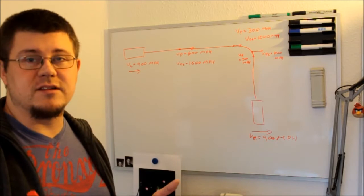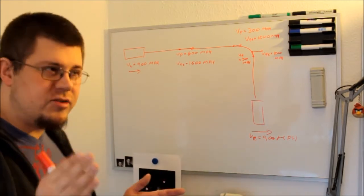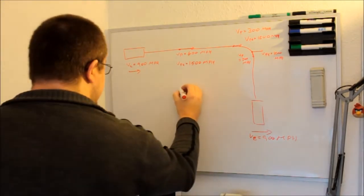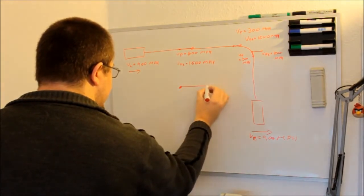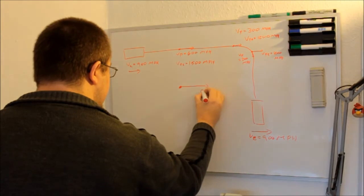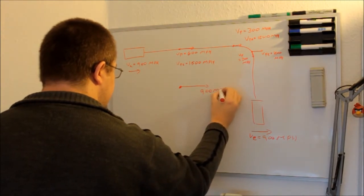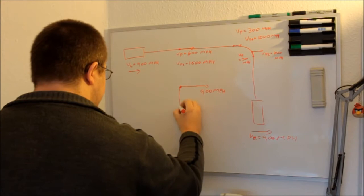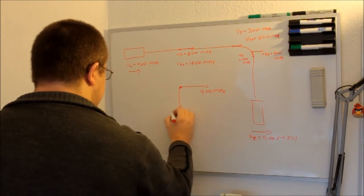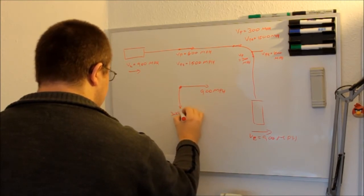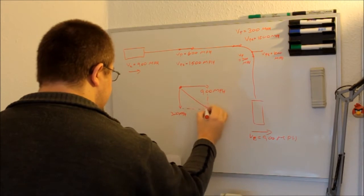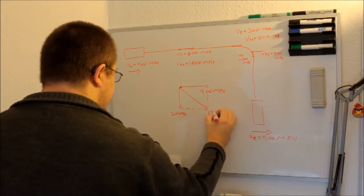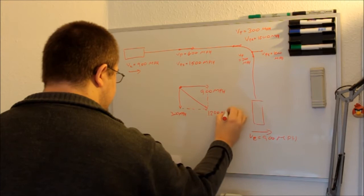He is decomposing his vectors wrong. What he should have been doing was, if this is the airplane, then it is going in this direction with 900 miles per hour, and in this direction with 300 miles per hour.